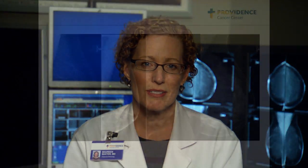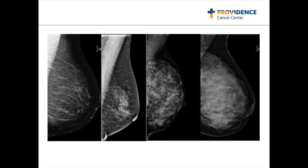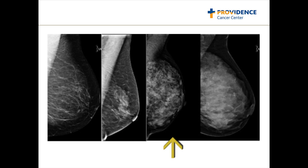Let's look at some examples. This is an image of the four categories of breast tissue: fatty, scattered fibroglandular, heterogeneously dense, and here on the right, extremely dense. These last two categories are generally considered dense.